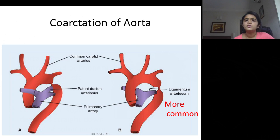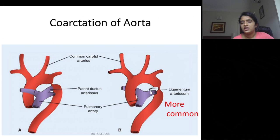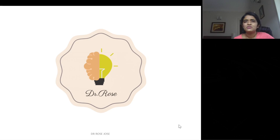Coarctation of the aorta is a narrowing of the aortic lumen. It is classified into two types based on the position relative to the ductus arteriosus or ligamentum arteriosum: pre-ductal coarctation, occurring before the ligamentum arteriosum, and post-ductal coarctation, occurring beyond it — the post-ductal type is the more common. This concludes the quick recap of the major events of cardiovascular system development.